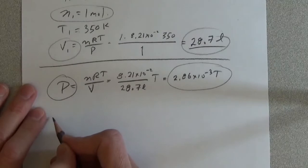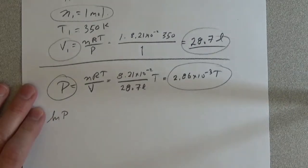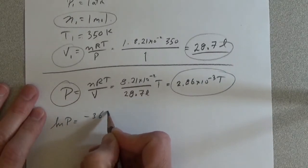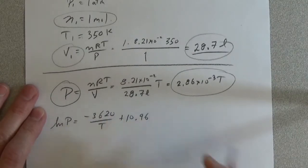We have that the natural log of the pressure is equal to minus 3620 over T plus 10.96.